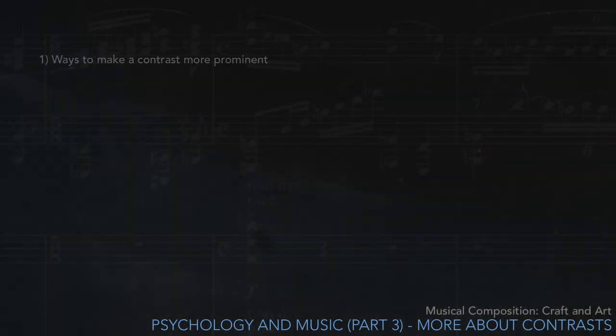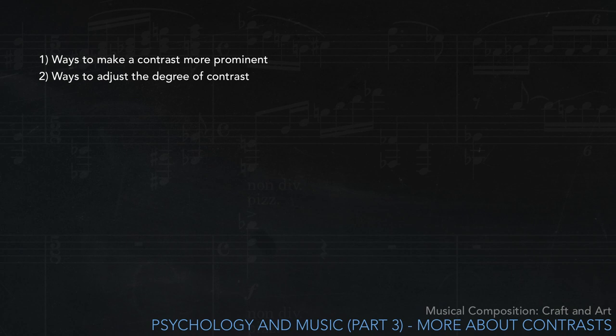To sum up, we've looked here at ways to make a contrast more prominent by planning in advance to emphasize contrast effects, as well as at ways to adjust the degree of contrast by changing more than one dimension of music at the same time. These things are rarely discussed in composition teaching, but they're essential for really effective composition.